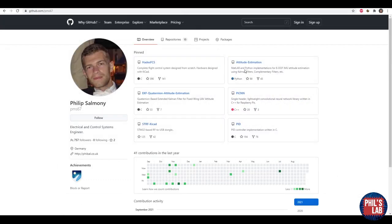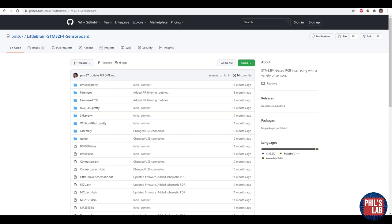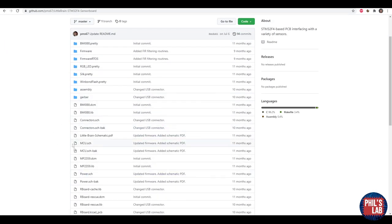If you'd like to find the little brain board design files as well as the source code I'm using in these videos you can go to my github repository at github.com/pms67, navigate to the little brain STM32F4 sensor board directory and you can find all the firmware, the RTOS firmware, all the libraries, schematics and KiCad design files and so forth.